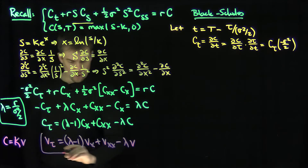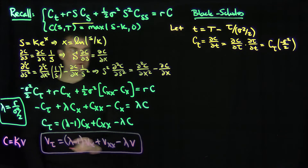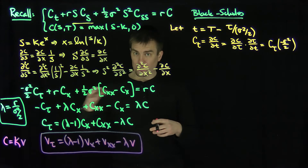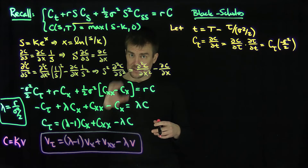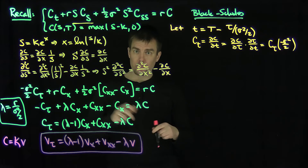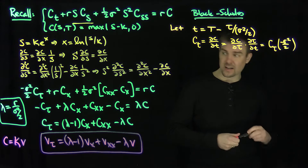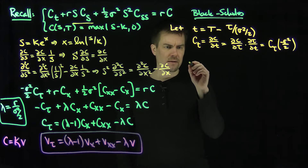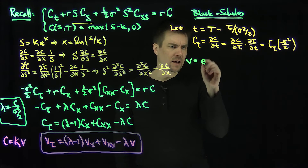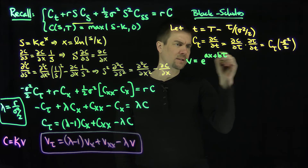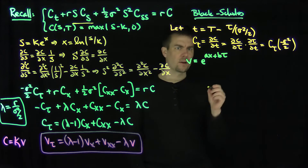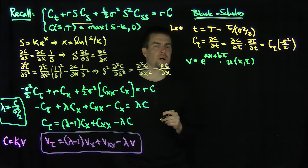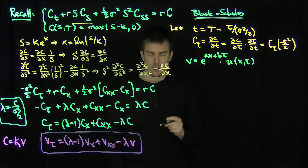What we're going to do with this equation for v is dilate it by an exponential. By choosing the parameters correctly, that dilation will turn it into the ordinary heat equation — this is a classic trick used in the study of parabolic equations. So I'm going to let v equal e to the (ax plus b·tau) times a function u of x and tau. That's my transformation of the v variable into the u variable.